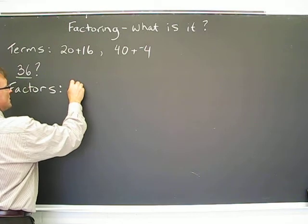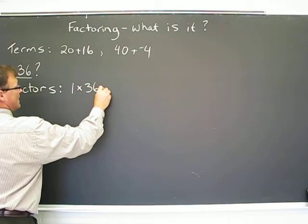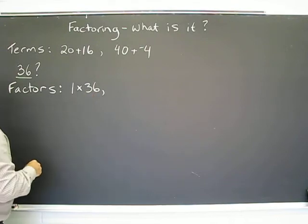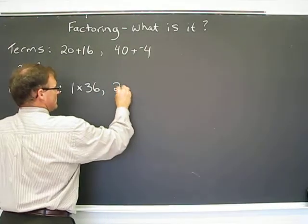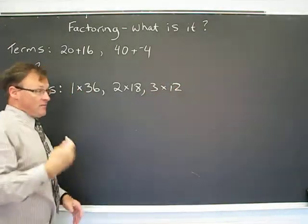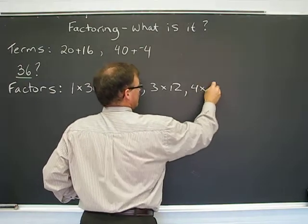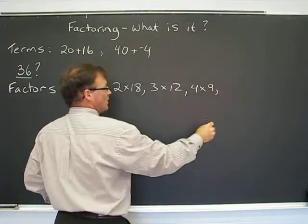So the first, most boring one, is 1 times 36, and again 1 and 36 are both factors. You could also have 2 times 18, 3 times 12. Now as I said before, it's a limited number of factors. We're going to run out pretty quickly here. 4 times 9, 5 doesn't go.